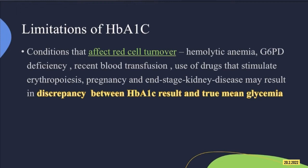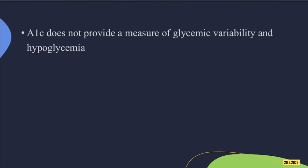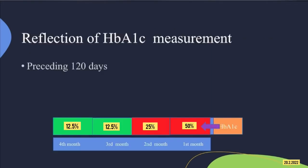Here are some limitations of HbA1c. Conditions that cause falsely low results include hemolytic anemia, G6PD deficiency, recent blood transfusion, drugs that stimulate erythropoiesis, pregnancy, and ESRD. In such conditions, there may be a discrepancy between HbA1c results and true glycemia. Also, HbA1c does not provide information on glycemic variability or hypoglycemia.